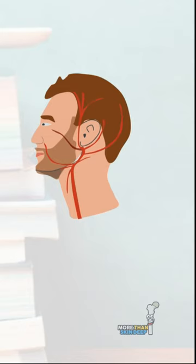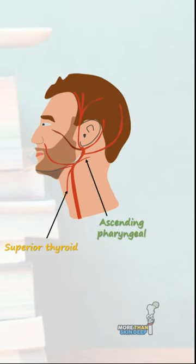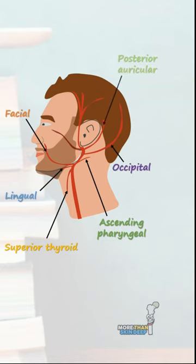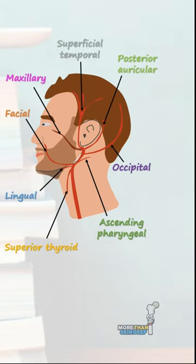From bottom to top, these branches are the superior thyroid, ascending pharyngeal, lingual, facial, occipital, posterior auricular, maxillary, and superficial temporal arteries. You can remember these branches using the mnemonic